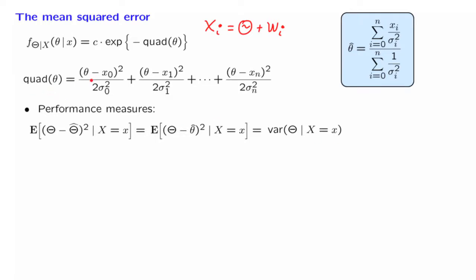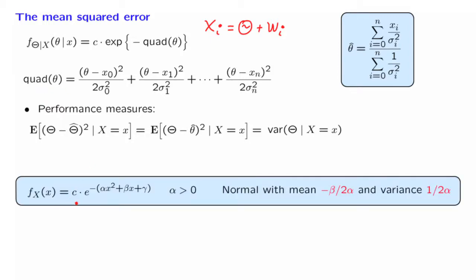Can we read off the variance just by looking at the formula for the posterior distribution? More or less we can. Recall that if you are given a density of this form, you recognize it is normal, and the variance is determined by the coefficient next to the x-squared term. Here we're talking about a PDF of theta, so we look for the constant sitting next to the theta-squared term. There will be multiple theta-squared terms, so we need to collect all of them.